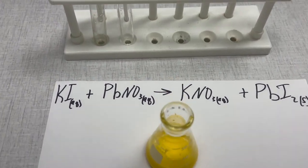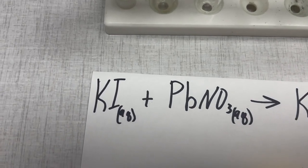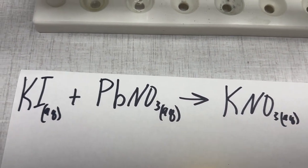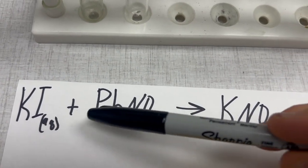So when we run the reaction, we had KI aqueous. We reacted it with the lead nitrate, which is also aqueous. Those are our two solutions here and here.